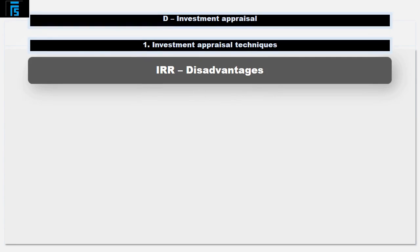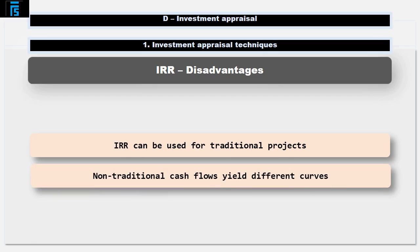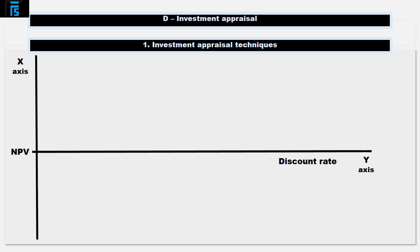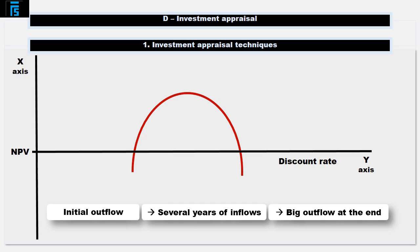We are assuming with the basic decision rule that the project involves an initial outflow followed by years of inflows — this is known as a traditional project, and this is what gives the curve on the IRR graph its downward slope from left to right. Other types of projects will yield different shaped curves, hence the decision rule would need to change. For example, if a project consisted of an initial outflow, several years of inflows, and then a big outflow at the end such as site clean-up costs, then the IRR graph may look different. There are many possible graphs depending on the pattern of the cash flows, which makes the basic decision rule of 'if the IRR is greater than the cost of capital then accept' unreliable.